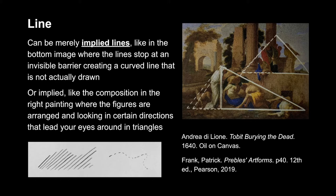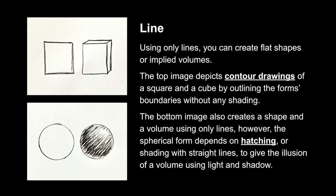We want to know what subjects are looking at. Another example of an implied line is in the bottom photo, where lines kind of stop at an invisible barrier, giving the suggestion of a line without there actually being one. Lines can connect to create shapes or to create the illusion of a volume or a form. The top example only has the boundaries, the edges of the form — no shading, no coloring — and that's called a contour line drawing. The bottom image uses straight lines to create a sense of space and depth but relies more on the illusion of lighting, whereas the first one doesn't really have lighting at all.